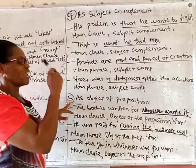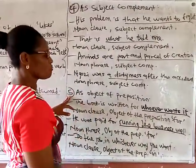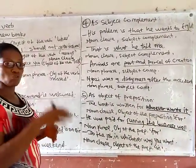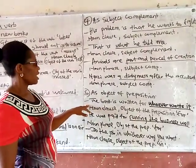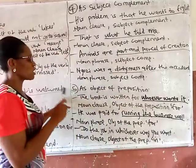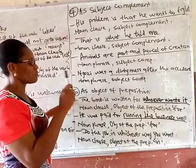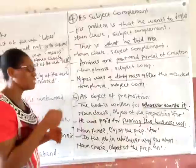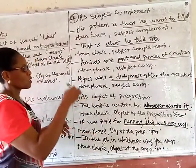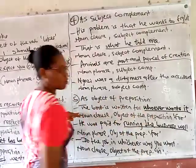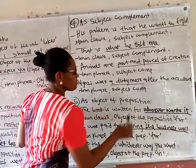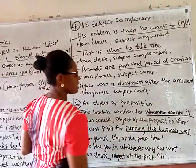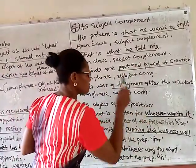The fifth function is that a noun phrase or noun clause can act as object of a preposition. A preposition is a word that shows the connection between two parts of a sentence or the position of an object. For instance: 'the book is written for whoever wants it.' In object of a preposition, after the verb you still have the preposition, and immediately after the preposition you get the noun clause or noun phrase. Here, 'is written' is the verb, 'for' is the preposition, and 'whoever wants it' is the noun clause — the object of the preposition 'for', not the object of the verb.